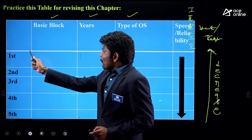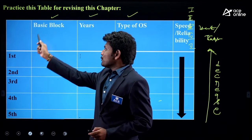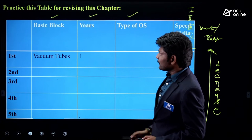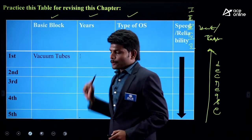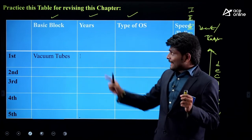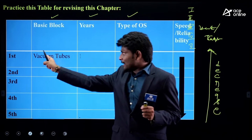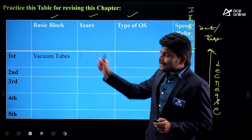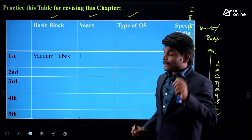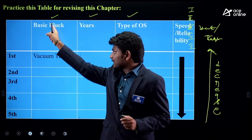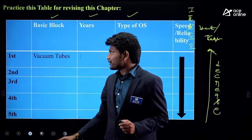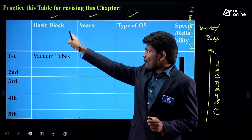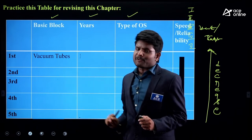What are the basic blocks used in first generation computers? The answer is vacuum tubes. I already told you: in each generation, understand what the basic blocks are. While answering this, you should recall: what are the basic blocks in second, third, fourth, and fifth generation? Those are the things you need to recall.